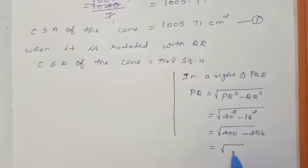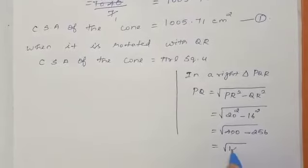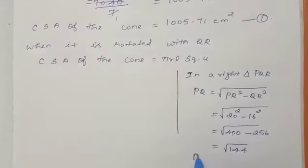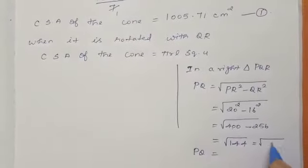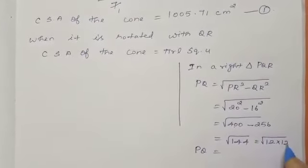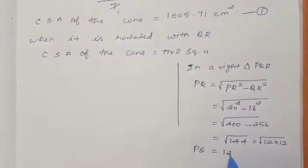400 minus 256. Subtract means we can get 144. So PQ is equal to 144. So PQ is equal to 144, we can split 12 into 12, 12 cm.